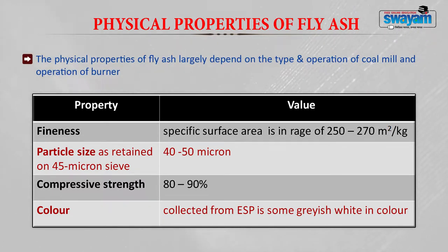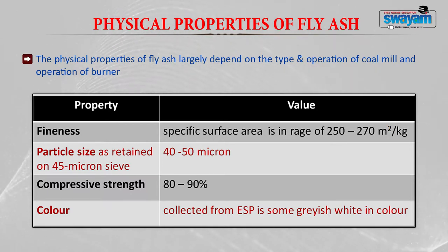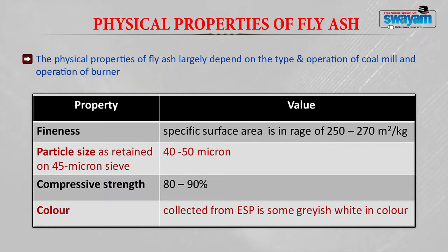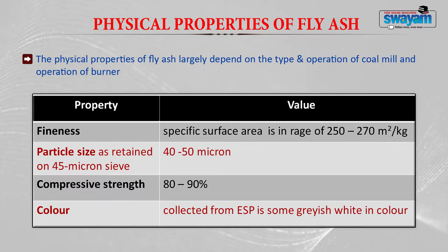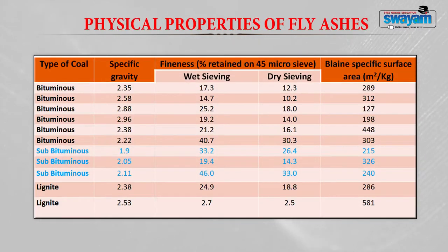The physical properties of fly ash largely depend on the type and operation of the coal mill and the burner. The fineness of fly ash is measured in terms of surface area, which is in the range of 250 to 270 m²/kg. The particle size retained on a 45-micron sieve is 40 to 50 percent. Compressive strength of fly ash is 80 to 90 percent. The color of fly ash collected from the electrostatic precipitator is grayish-white, though this may vary depending on the source of coal and the kind of combustion used.